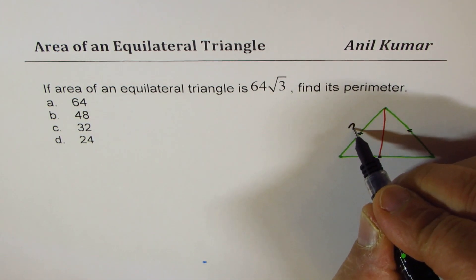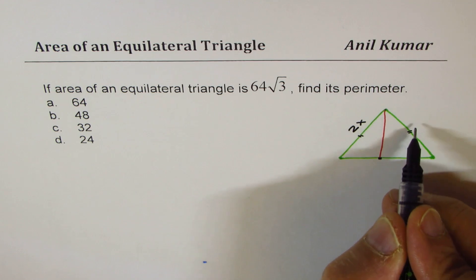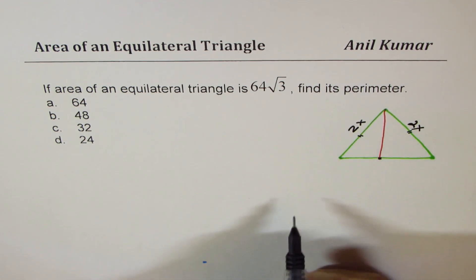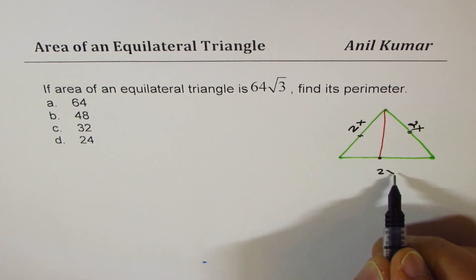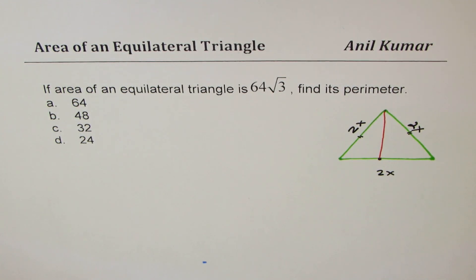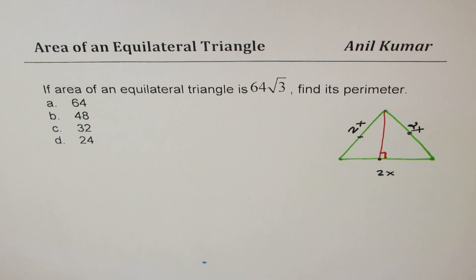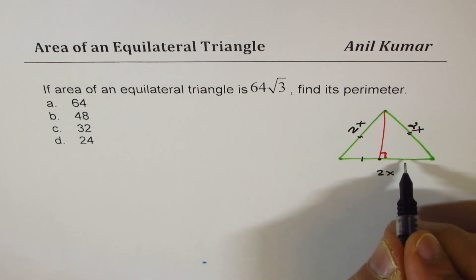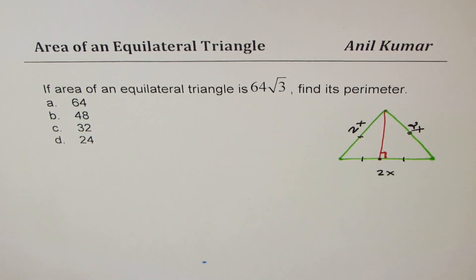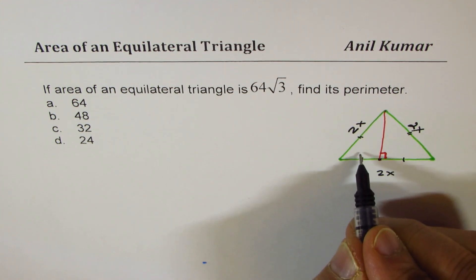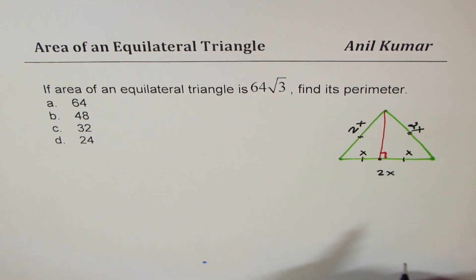So let us take the side length of 2x. So we have all sides as 2x. This is also 2x. Here I've dropped a perpendicular from a vertex and this perpendicular will always divide the base in equal sides. That means each side will be x units long.